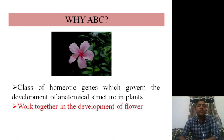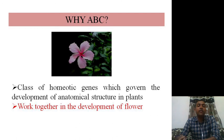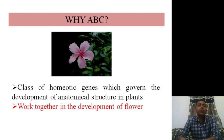In a flower, a vegetative meristem develops into a floral meristem and ultimately develops into a flower. A, B, and C are basically classes of homeotic genes which govern the development of anatomical structures in plants. This is very important because they work together in the development of the flower and its different whorls.